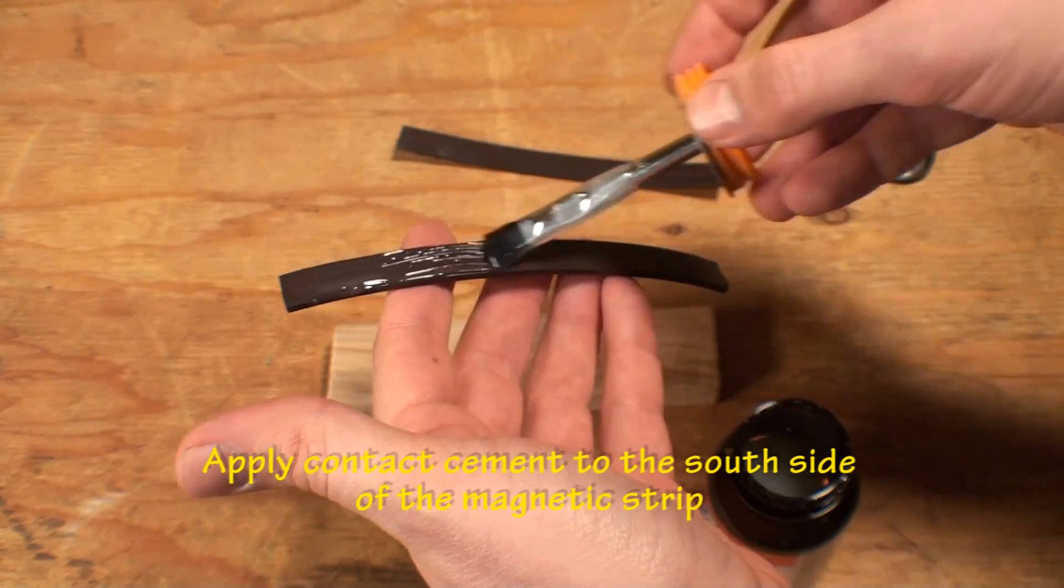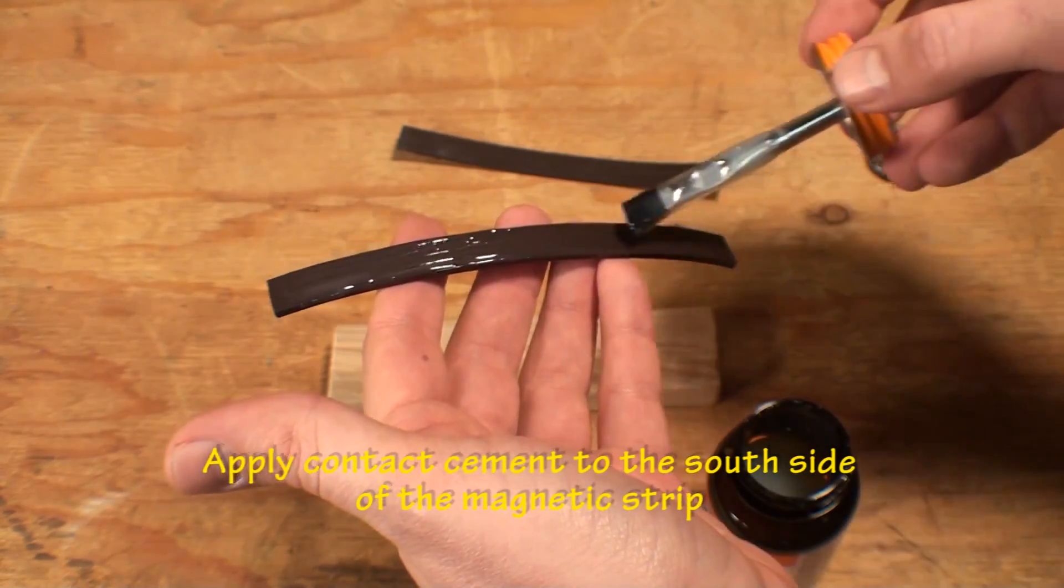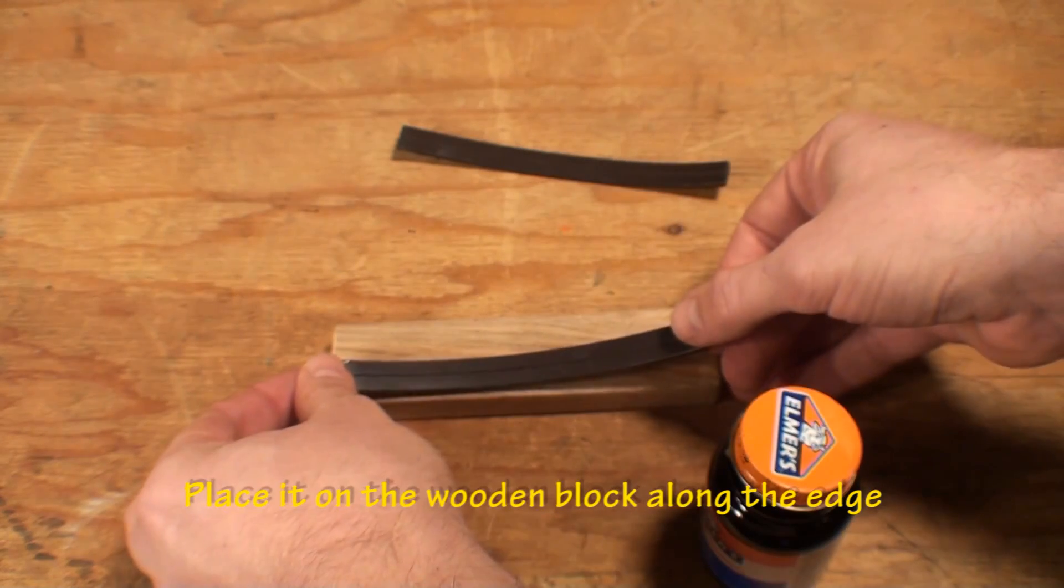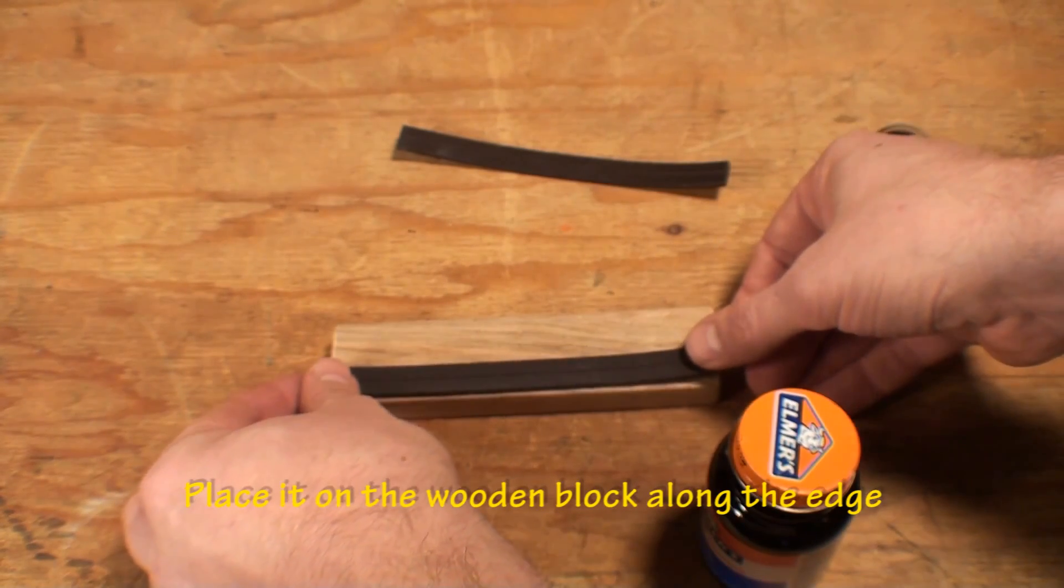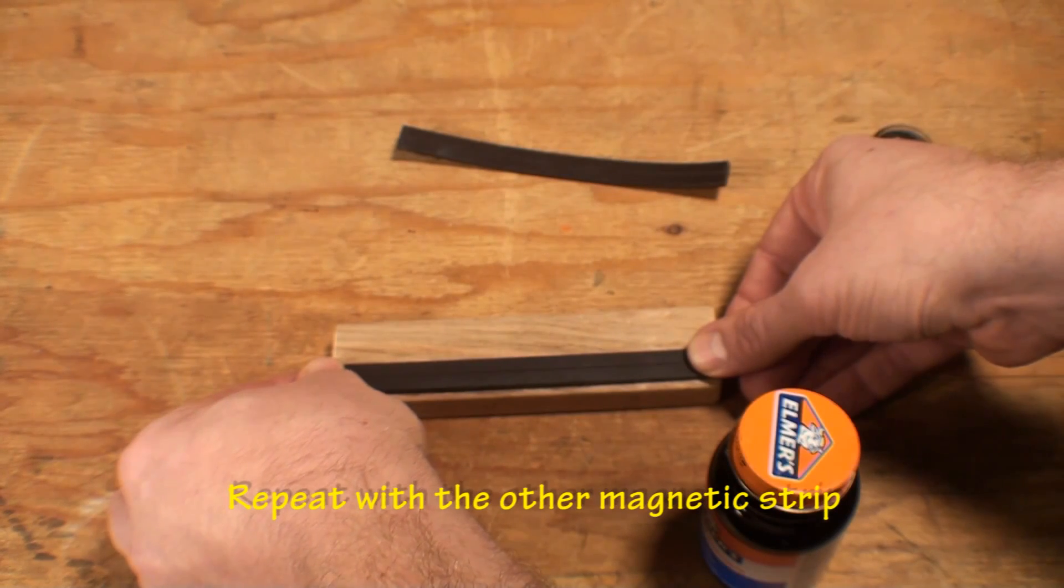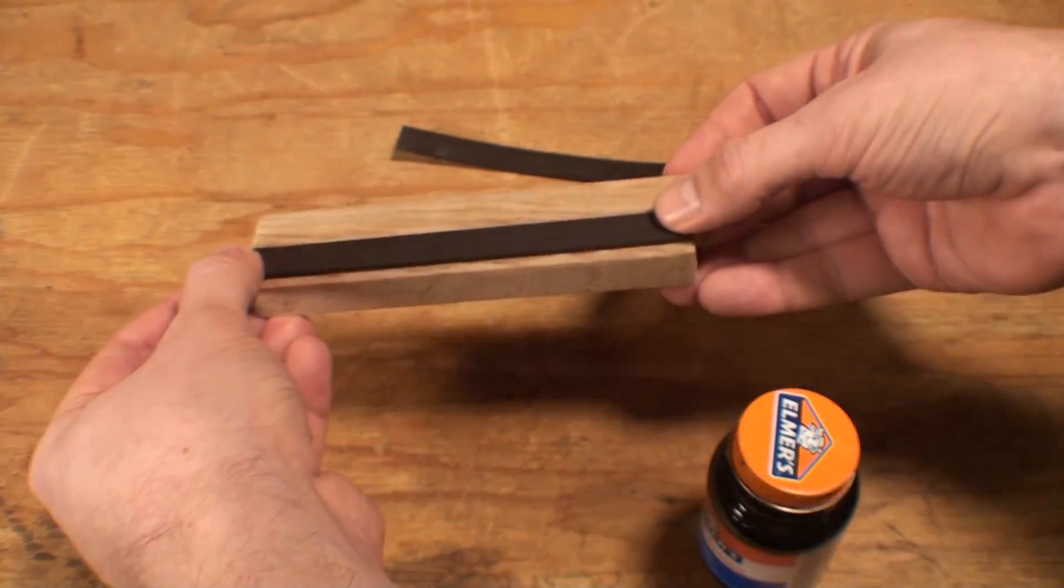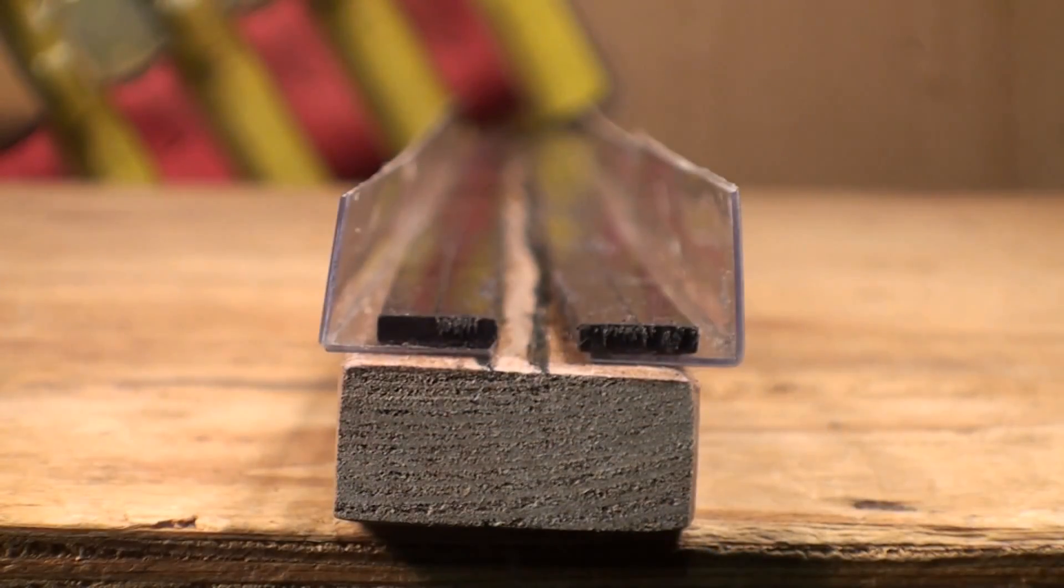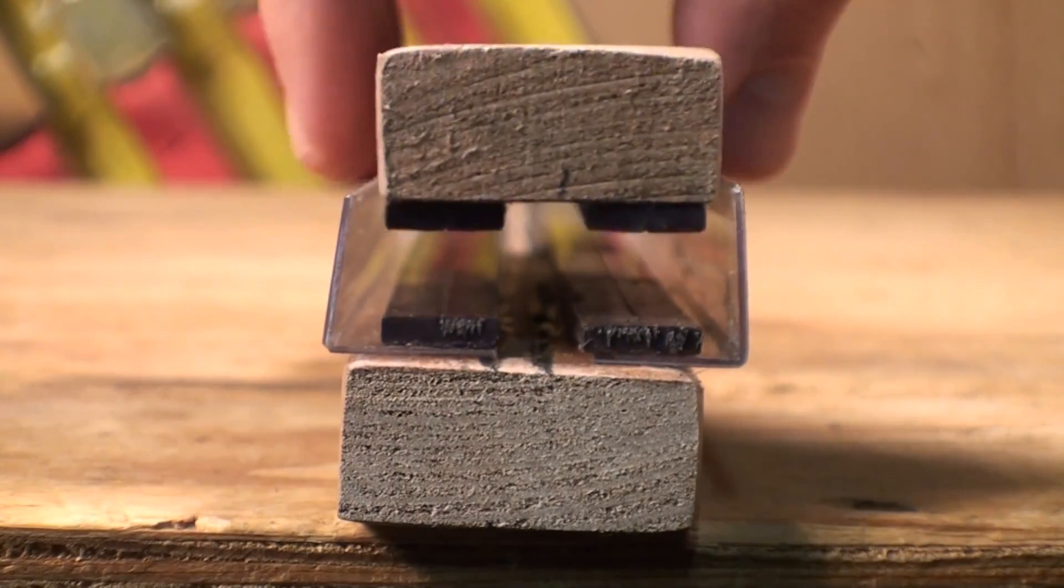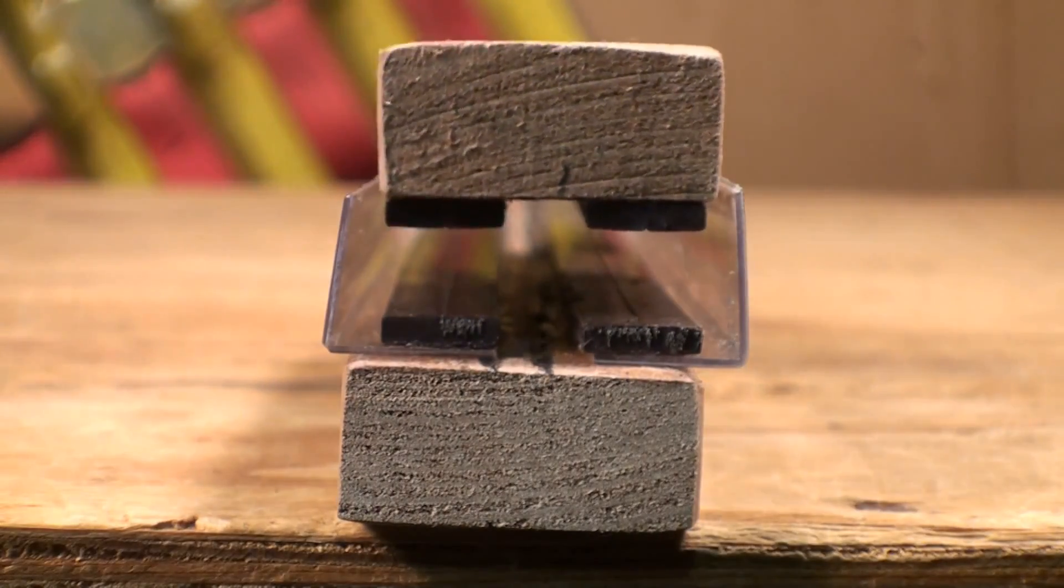Place a light coat of contact cement on the south side of the magnetic strip and place it near the edge of the wooden block. Repeat this for the other magnetic strip and allow to dry. The magnetic strips on the train block should be spaced wider than the track magnetic strips.